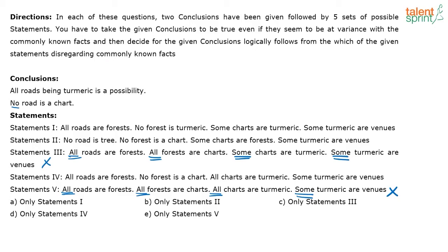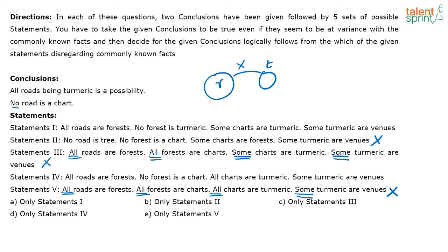Trying statement 2: no road is tree, no forest is chart, some charts are forest, some turmeric are venues. There is no relationship between chart and road anywhere in these statements, so you will not be able to get the conclusion no road is chart. Eliminate statement 2. You are now left with statements one and four.